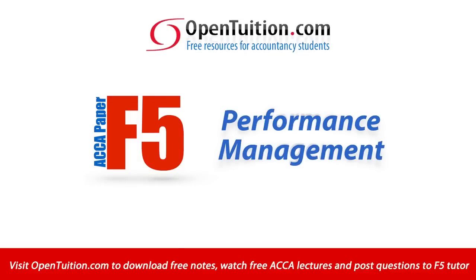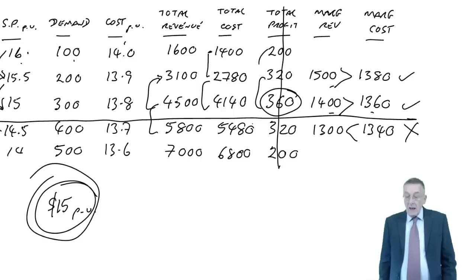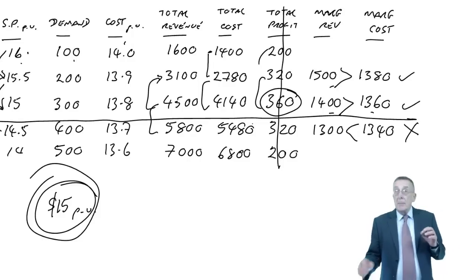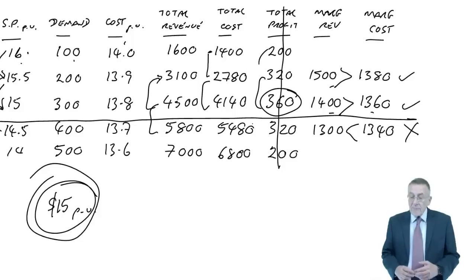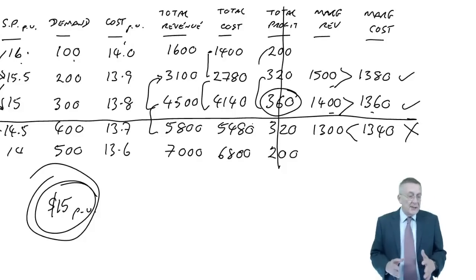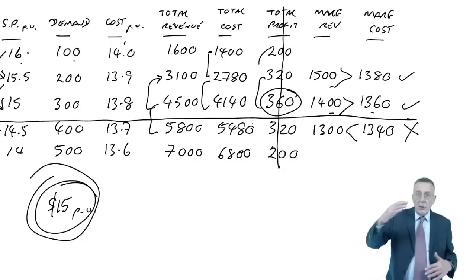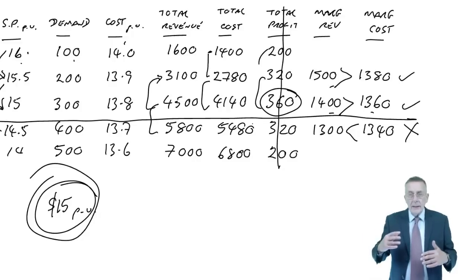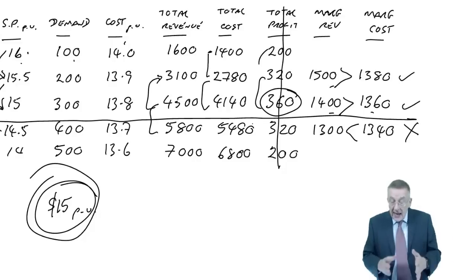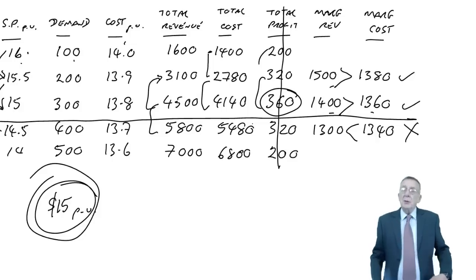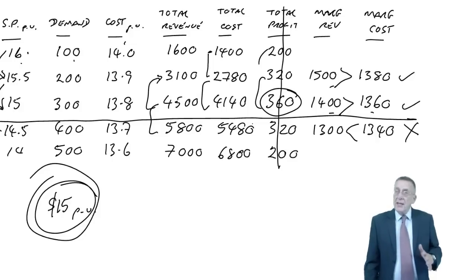This is a lecture from Open Tuition. To benefit from the lecture, you should download the free lecture notes from opentuition.com. This is the third lecture on pricing, and as I said in the previous lecture, we're going to do optimum pricing again - the same sort of idea: lower price, more demand. But instead of doing it as a table, as we did before, we're going to do it using equations.